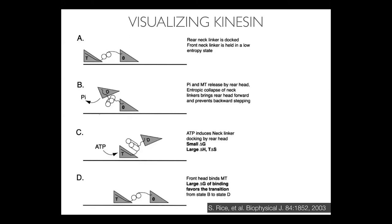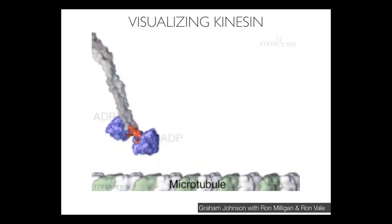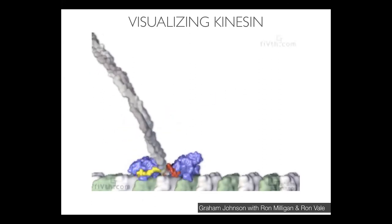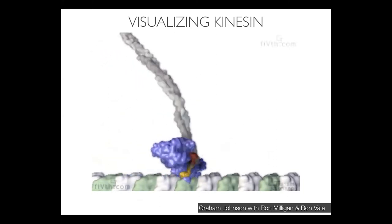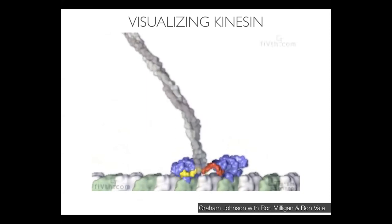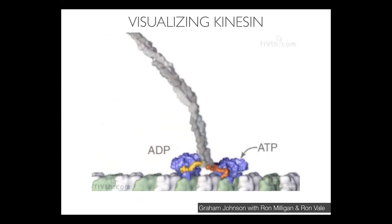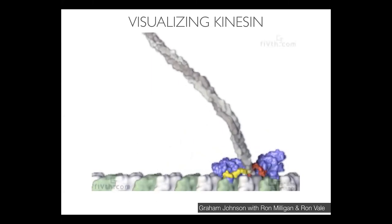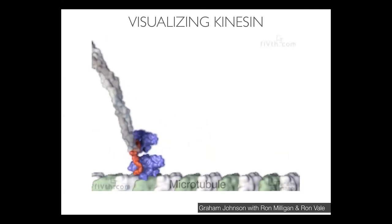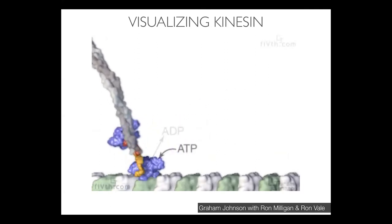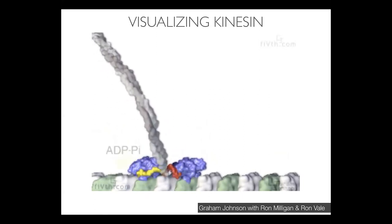What happened was that the head of that lab, Ron Vale, decided after solving the structure of kinesin to hire an animator named Graham Johnson to create an animation of kinesin. This was really the first molecular animation I had ever seen. It shows kinesin walking along a microtubule using all the data they had gathered — not just structural data about the protein's shape, but also information about its dynamics: how it moves, how it binds to other proteins, and how it uses energy to take those steps. This really brought the protein alive for me in a way that nothing else had, and I became super interested in whether I could learn animation and apply it to the things we were studying.